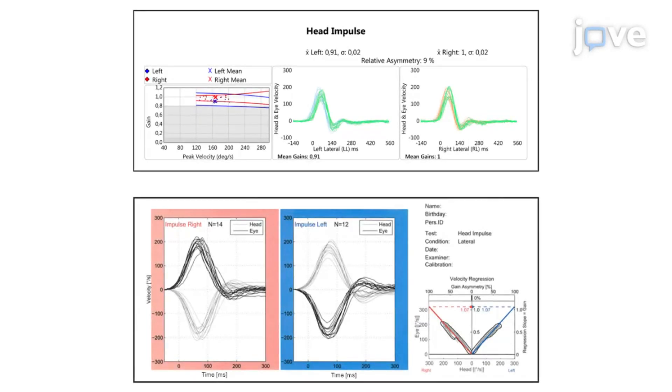Results indicate normal findings for lateral SCCs such that curves for both head and eye velocities match, all mean gain values are within the normal range, and there are no pathological saccades present with both VHIT systems. VHIT system B reports shown at the top and VHIT system A reports shown at the bottom.